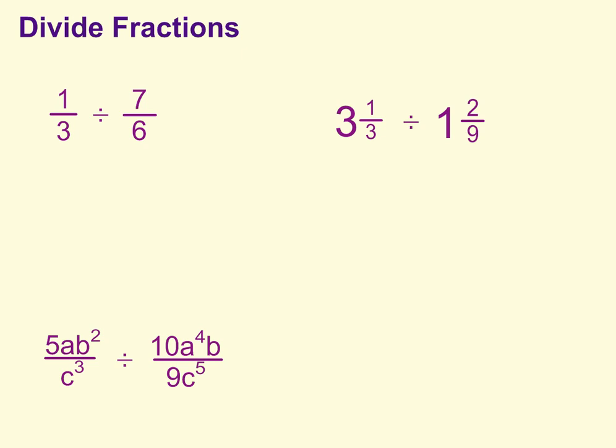So what that means, looking at this first example, you are going to keep the one-third the same. So one-third, we're going to change that division into multiplication, and then instead of multiplying by 7 over 6, we multiply by the reciprocal, so we flip that fraction, 6 over 7.